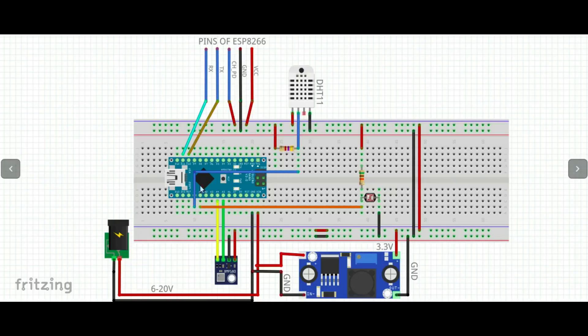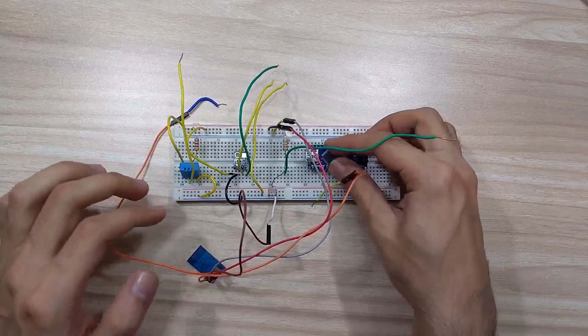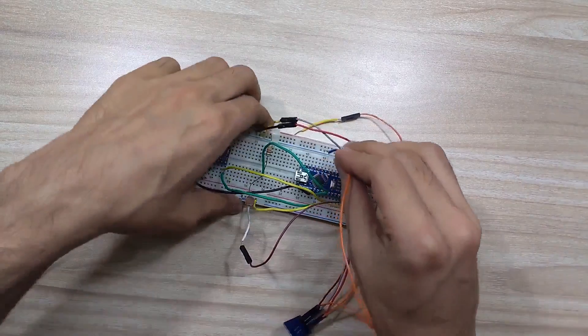For the pins of ESP8266, connect VCC and ground to 3.3 volt and ground rail, connect CHPD to VCC, TX to A10 and RX to A11. Initially I realized the circuit on a breadboard.